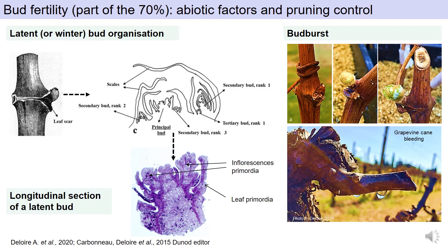Of course, the secondary and tertiary buds are less fertile, but it's still better than nothing. On the right-hand side, you see a vine that is bleeding — what we call in French les pleurs de la vigne. This is due to the fact that before bud break, you need the right soil temperature and air temperature to break what we now call ecodormancy. When the roots start to function again, the latent bud can begin development.